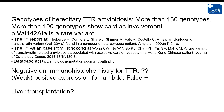The hereditary TTR amyloidosis has more than 130 genotypes with a wide range of phenotypes, and more than 100 of those genotypes show cardiac involvement. In this particular case, the genotype was VAL-142 alanine, a rare variant first reported in 1999 from a Scandinavian family. The first Asian case was reported from Hong Kong in 2018, so this may represent the second Asian case of this specific variant.